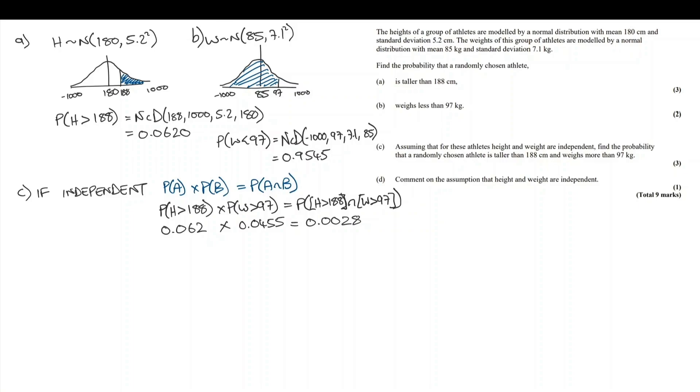Part D asks us to comment on the assumption that height and weight are independent. This is going to need us to respond in a sentence. Height and weight are independent. This means that one of these variables doesn't have any impact on the other. Somebody's height doesn't have any impact or influence on their weight. I don't think I agree with that. Taller people are much more likely to be heavy than short people. As you grow tall, your height increases, your volume increases, usually your width increases, so your overall weight is going to be more. I don't agree that height and weight are going to be independent.